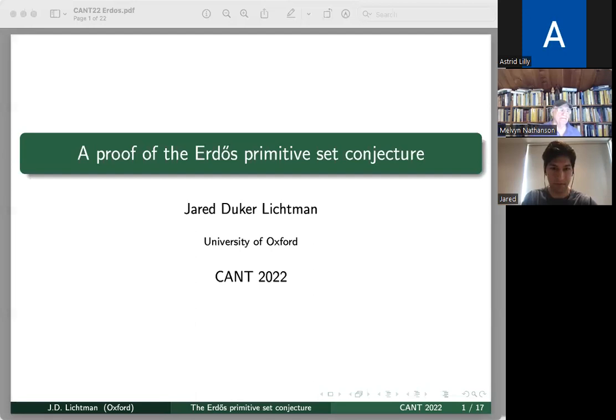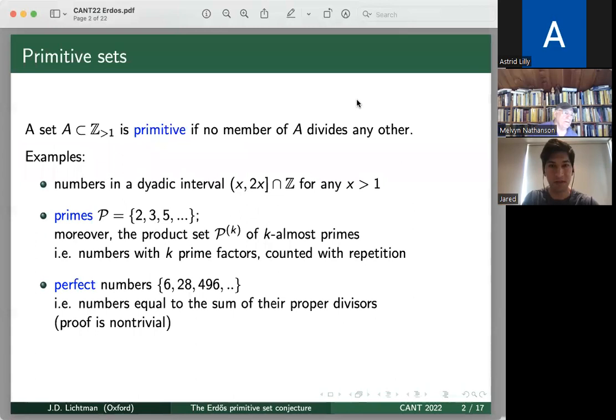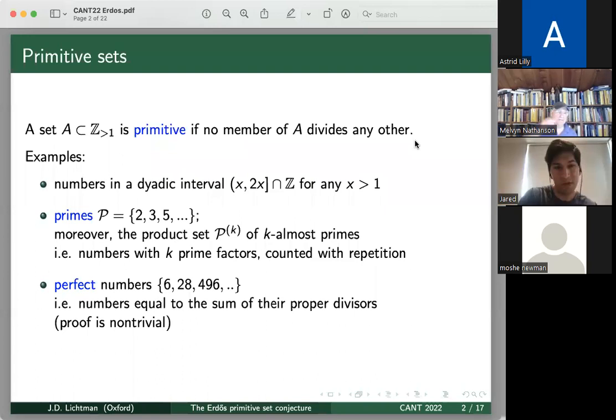Can you see the slides? Can you see that I've changed the slide? Yes. All right, great. So I'm going to start with a definition. We'll say that a set of integers greater than one is primitive if no member in the set divides any other. So we're going to exclude the number one, because if any primitive set contains one, then it will just have to be the singleton set. So for convenience, we'll just look at numbers that are at least two.